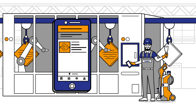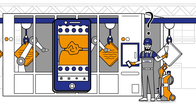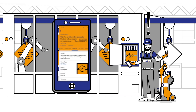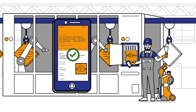But where is the air filter? He opens Paul's photo. Now he knows exactly where to find it. After cleaning the machine, Simon marks the work order as completed.